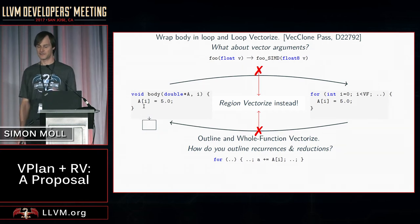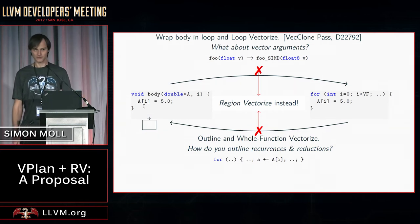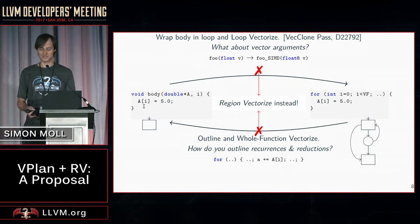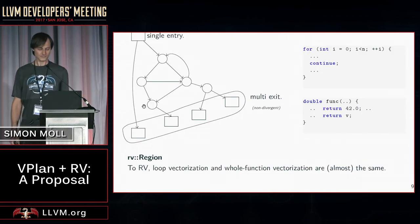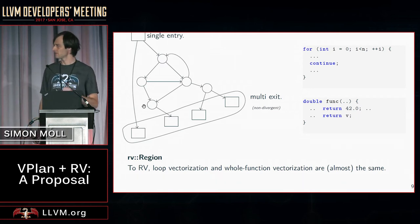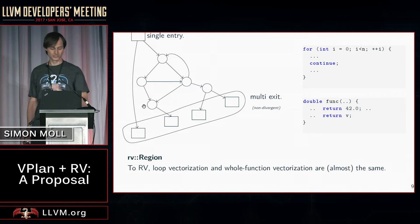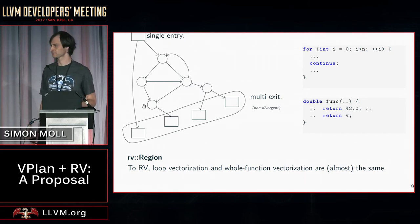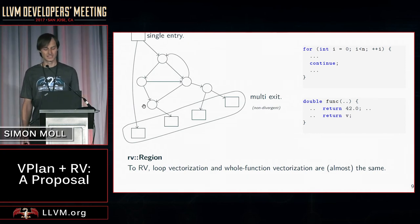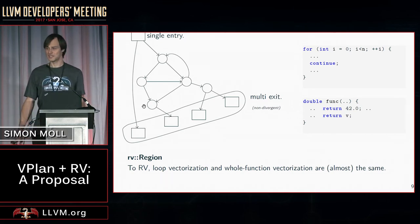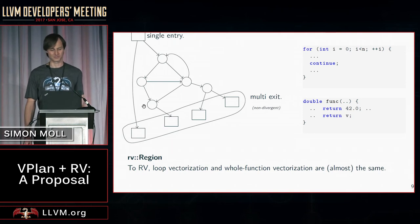Because if you look at it: on the left-hand side, a function is just a control flow graph whatever the context. On the right-hand side, you also have a control flow graph — just a different context. We're going to call that a region. For us, a region has a single entry and can have multiple exits, which need to be non-divergent — meaning control might not reach different exits from the entry. If your region is a loop, you can have continue statements but not divergent break. If you're in a function, you can have multiple return statements in uniform control flow. To RV, loop vectorization and whole function vectorization are almost the same — we don't differentiate much between them in most transformations.